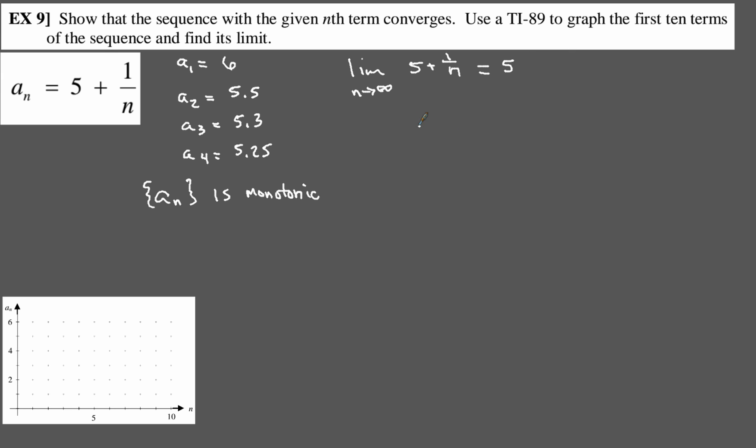So here's one where our sequence, a sub n, this one is going to be bounded both above by 6 and below by 5. So this is one where it is going to be bounded both above and below, and since it's monotonic and bounded, that means it's going to converge, and we already found a limit as n goes to infinity, so we also know that a sub n does converge to 5. So we know that our sequence converges to 5, and we also know it's bounded above and below, so we've just figured all of this stuff out just from listing the first four terms and then figuring out the limit as n goes to infinity.